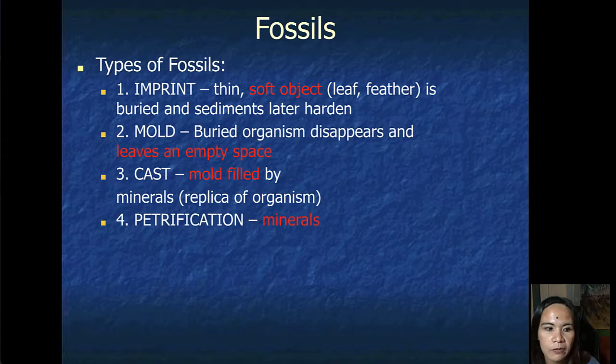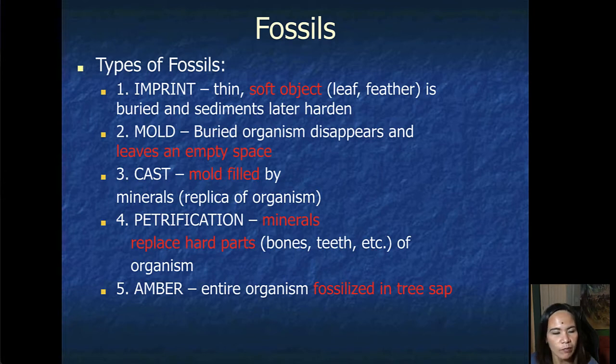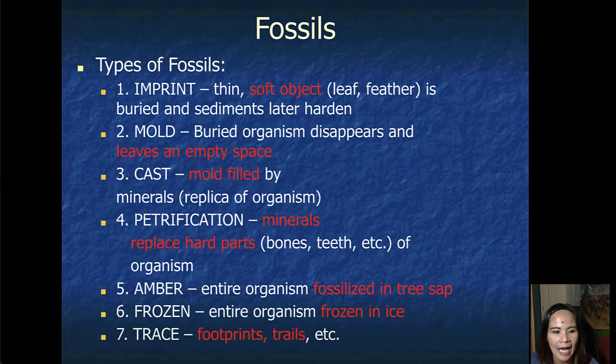Fourth is your petrification in terms of minerals. The minerals replace the hard parts like the bones, the teeth of organisms. And lastly, we have your amber, wherein the entire organism is actually fossilized, just like in a tree sap, for example. Number six, we have your entire organism frozen in ice. And number seven, we have your footprints, trails, etc. These are your types of fossils.